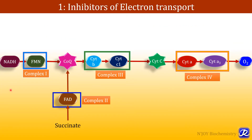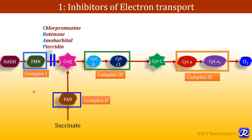The inhibitors of electron transport — the first inhibition site is between complex I and coenzyme Q. The inhibitors inhibit the transport of electrons from FMN to coenzyme Q, and these inhibitors are chlorpromazine, which is a tranquilizer; rotenone, which is an insecticide and fish poison; barbiturate; amobarbital; and the antibiotic piericidin.